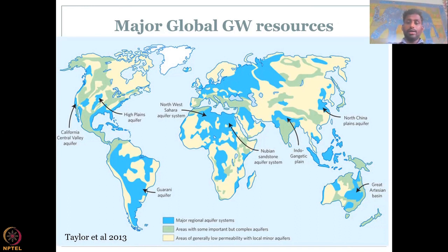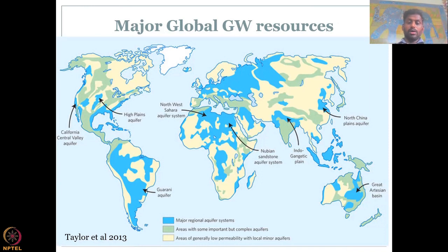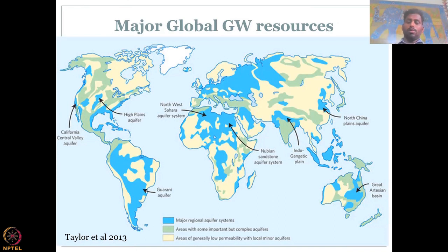These major aquifers have high yield and high recharge, and so they support large populations. If you look at groundwater use in the Ganges Basin, it almost caters to the big population surrounding the Ganges Plains — indirectly, the Ganges Basin supports around 1 billion population with both surface water and groundwater resources.